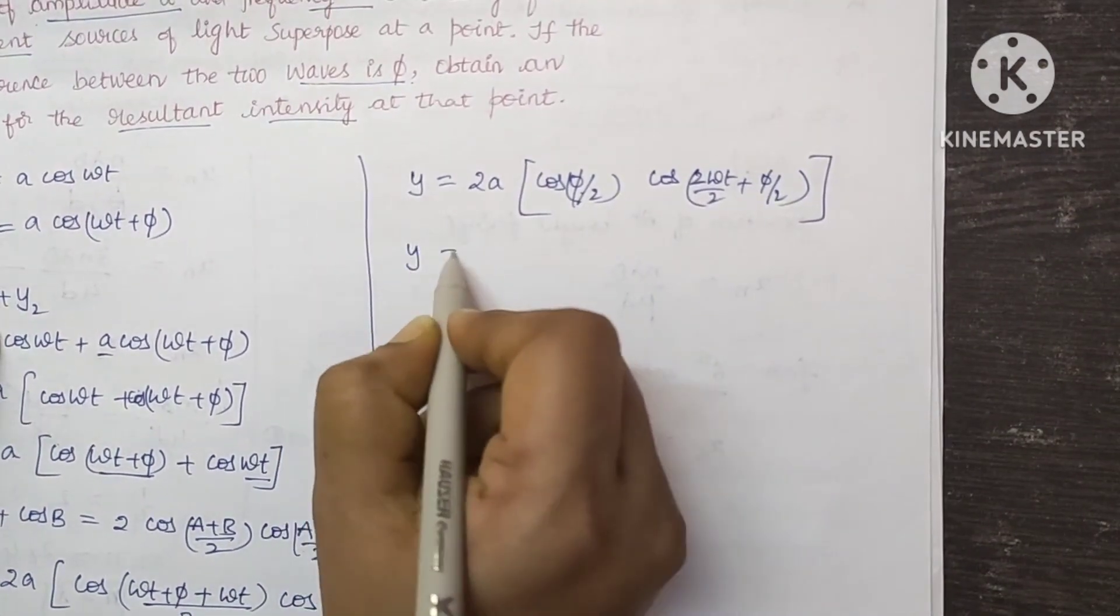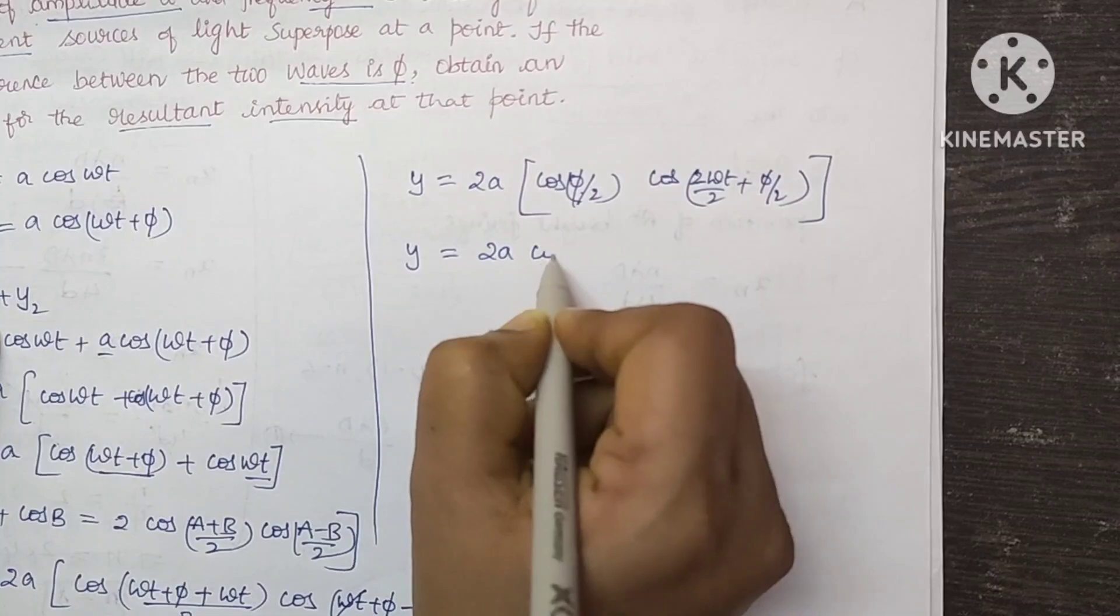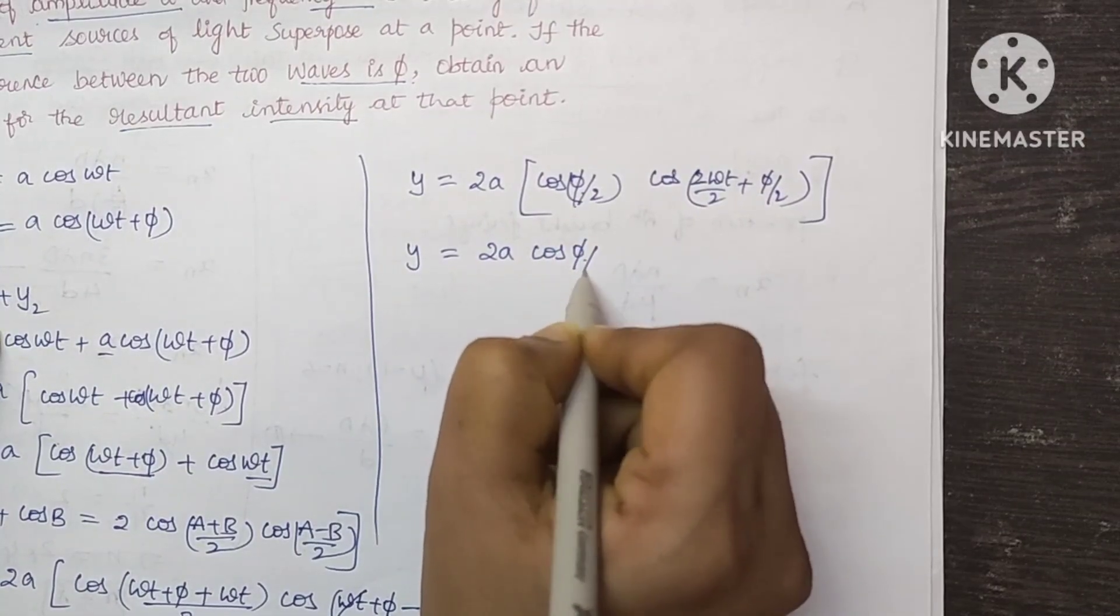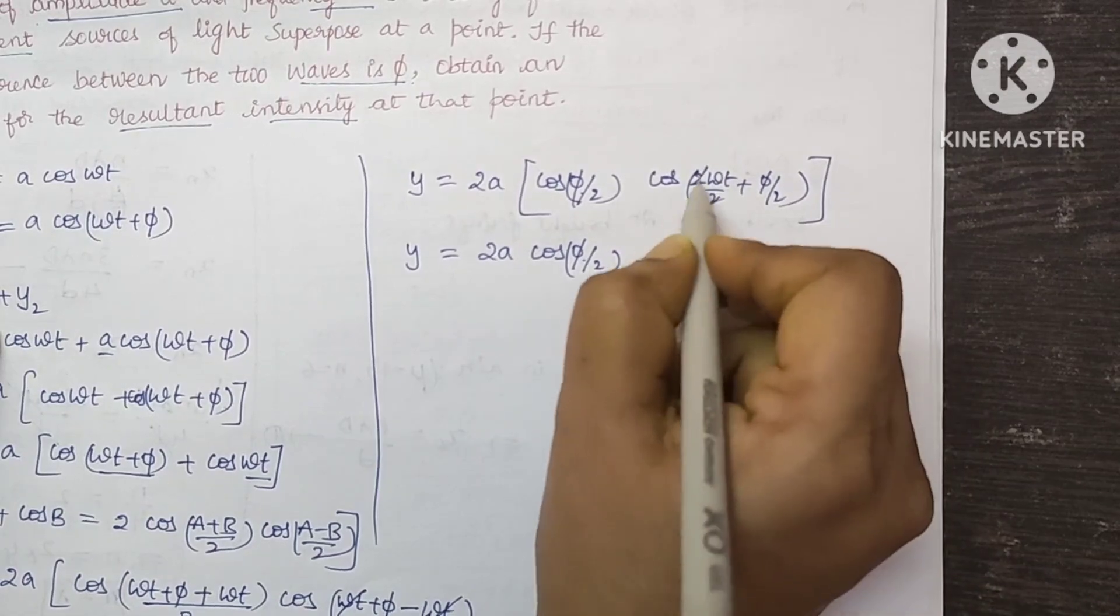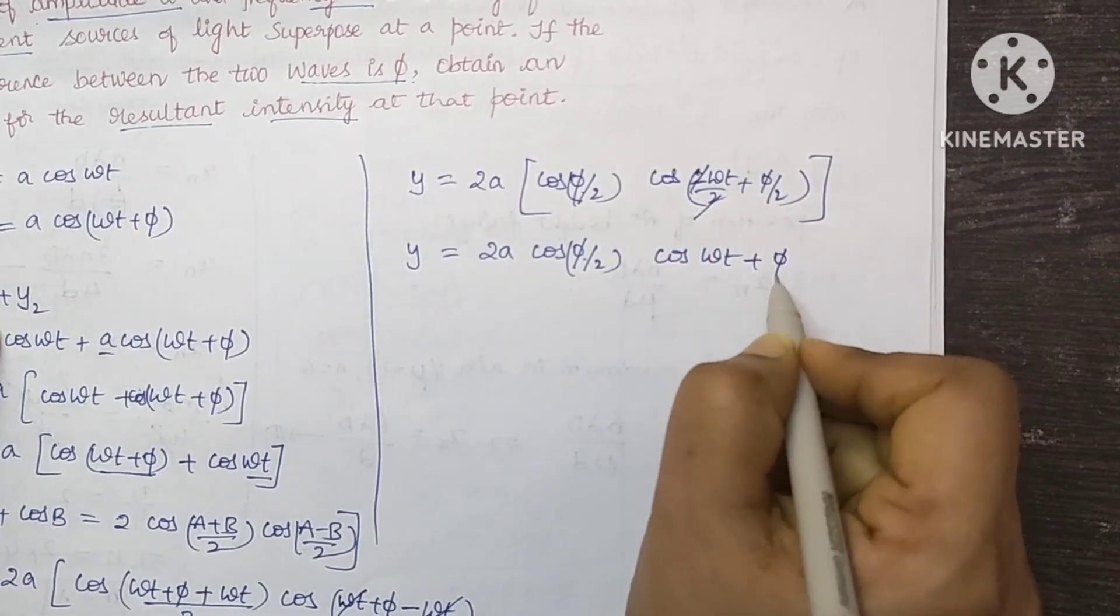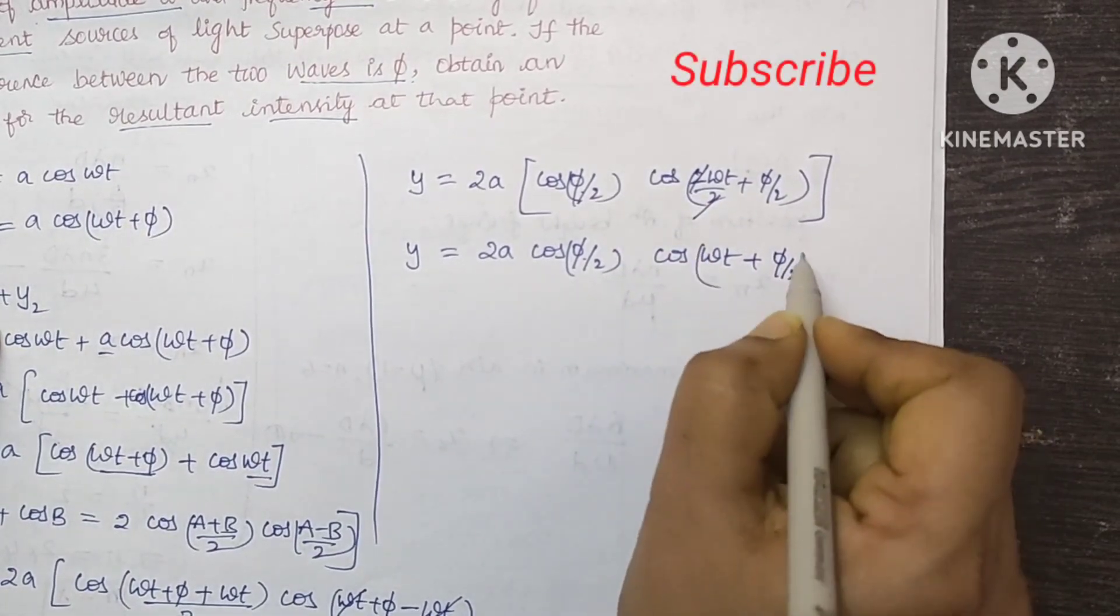So now y equals 2A cos phi by 2, and this will be cos omega t. This 2, 2 will get cancelled, plus phi by 2.